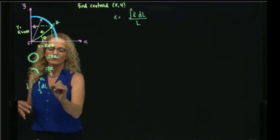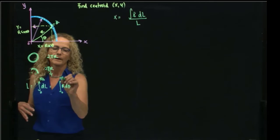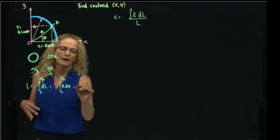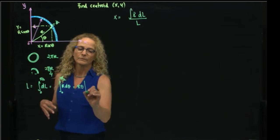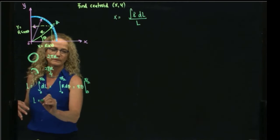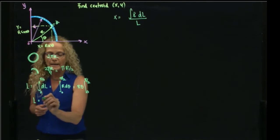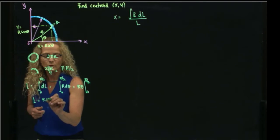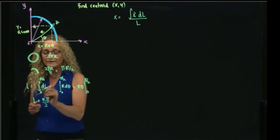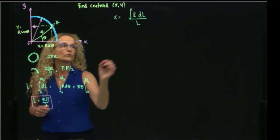And that will be r dθ evaluated from 0 to π, and then the length gives me exactly this π r over 2, right? And here we get exactly the same result, π r over 2. So this is my length that I will use over here.